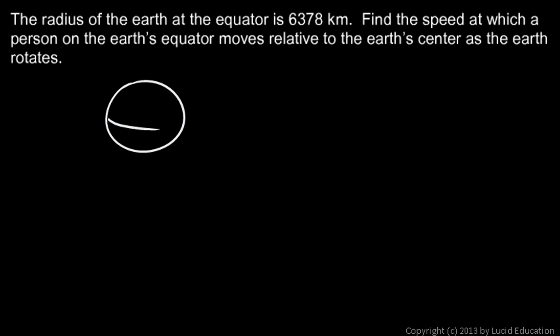So in other words, the Earth, roughly circular at the equator, is spinning around. And so if you are standing at the equator, say right here, you're moving in a circle around the center. How fast are you moving?